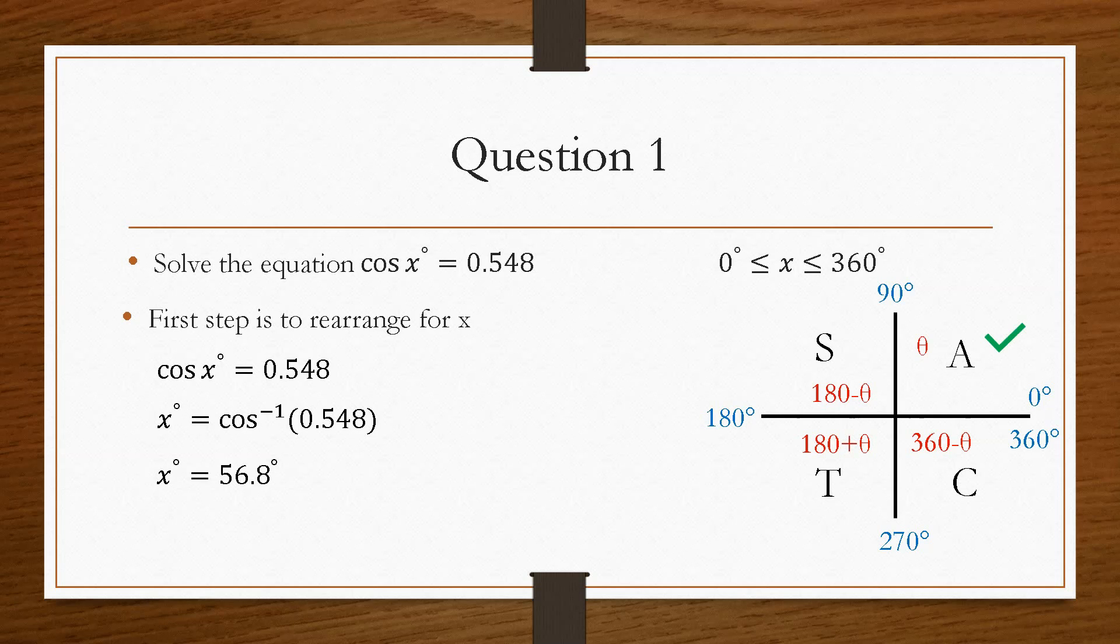So we tick the A quadrant because this value is positive. So cos is positive. Hence, all three of them are positive in this quadrant. Now, the other one we have to tick is where cos is positive. So that will be in the C section. Now, in the C section, the other angle can be found by 360 degrees minus the initial angle. Our initial angle is 56.8. So it's 360 minus 56.8, which gives us 303.2 degrees. And that is how you go about solving this kind of trigonometric equation. You are basically just finding the two values of x that correspond to that y value of 0.548.